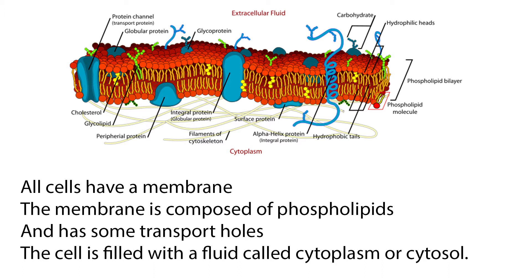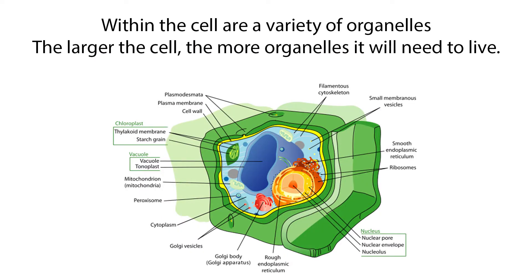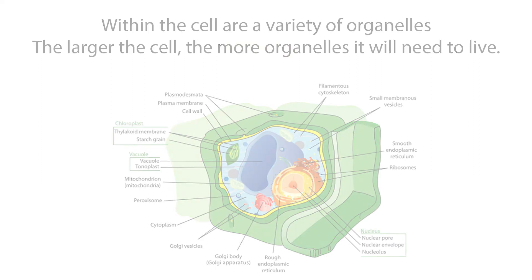The cell is filled with a fluid that is called cytoplasm or cytosol. Within the cell are a variety of organelles — groups of complex molecules that help a cell survive, each with its own unique membrane that has a different chemical makeup from the cell membrane. The larger the cell, the more organelles it will need to survive.